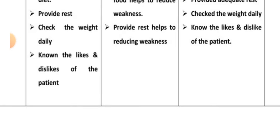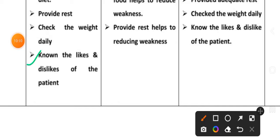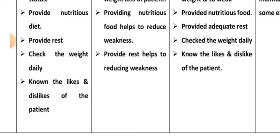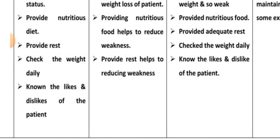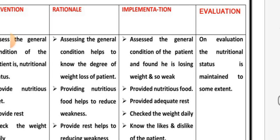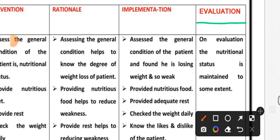Rationale: rest helps to reduce weakness. Implementation: provided adequate rest to the patient. Fourth intervention: check the weight daily. Fifth intervention: know the likes and dislikes of the patient so that appropriate food can be provided.